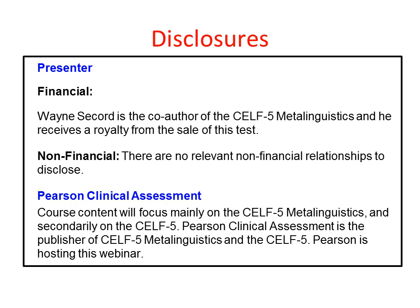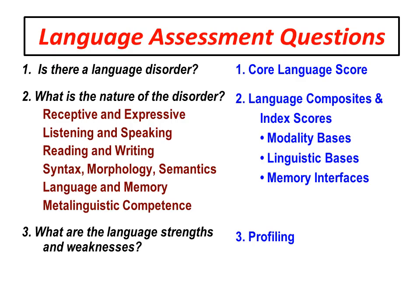According to ASHA standards, we must disclose any personal, financial, or other relationships. I have a financial relationship with the publisher Pearson, and I'm the co-author of the CELF-5 Test of Metalinguistics. I do receive a royalty from the sale of this test. Today we will mention CELF-5 Metalinguistics and CELF-5 itself. I need to disclose that I do receive some income for that. I'm not here to sell that — I'm here to promote the good practice that you need every day. Content will mainly focus on the CELF-5 Metalinguistics and secondarily on CELF-5.